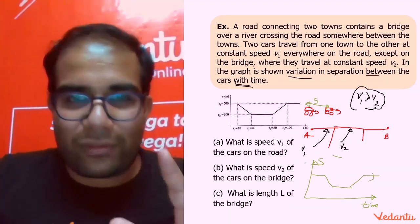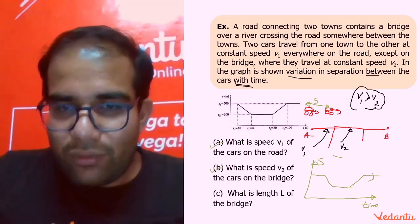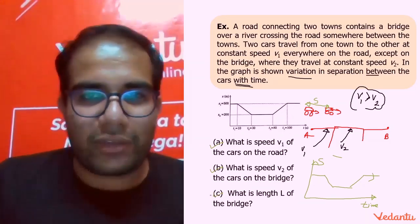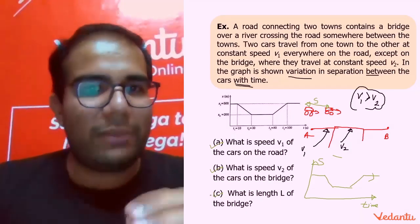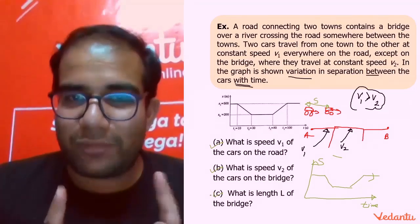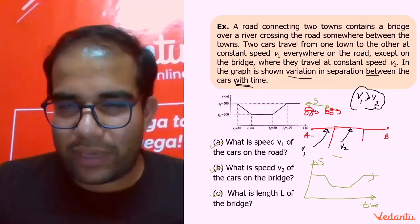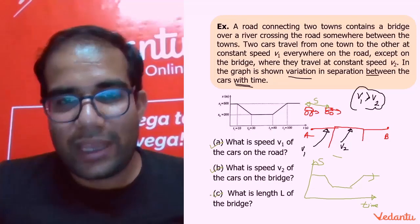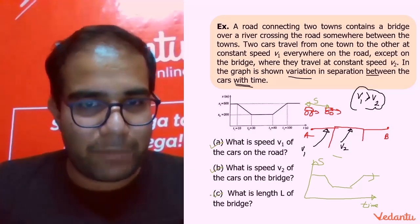And now in the graph guys, what is given to you? In the graph, there is a variation in the separation between the cars with time. Now that is something which is very unique. So guys, what is the data? It is a very unique data. Aam toor pe har question mein, aapko nahi milega. So data ye hai guys, it is given that the separation between the cars, yeh joh cars hai. In cars ki separation ka graph, aapne ko time ke saath given hai. See, what a beauty. We are given with the graph of separation between the cars as a function of time. I can guarantee you have never seen this kind of problem.